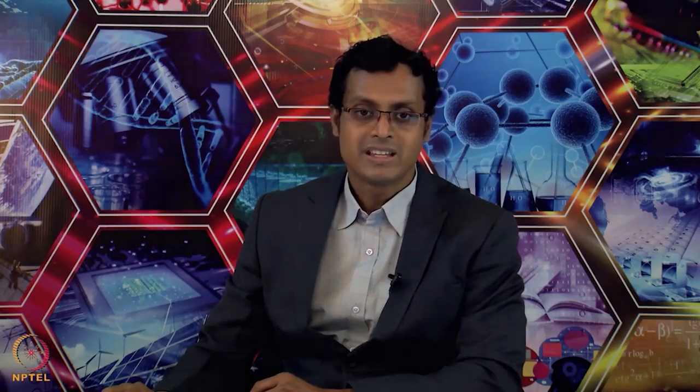Such a seemingly difficult reaction is rather easy for an enzyme to cleave. There are many steps where it is required to clip a peptide bond, and that is where carboxypeptidase comes into the picture. As mentioned, it is a zinc enzyme with 2 histidine and 1 glutamate. Quite interestingly, this is not a monodentate carboxylic acid binding to the metal — it is a bidentate glutamate binding on the metal.